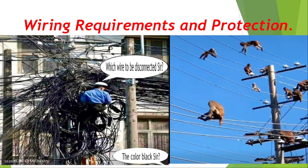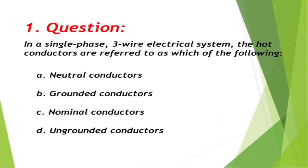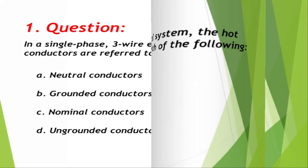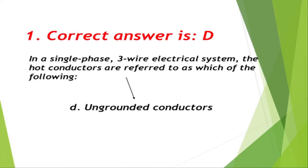Question number 1: In a single-phase three-wire electrical system, the hot conductors are referred to as which of the following? A. Neutral conductors, B. Grounded conductors, C. Nominal conductors, D. Ungrounded conductors. Correct answer is B, grounded conductors.